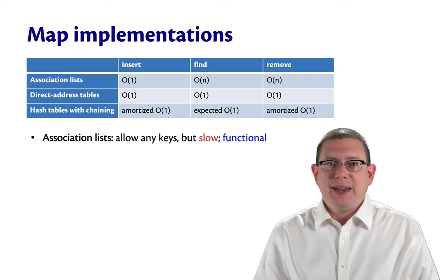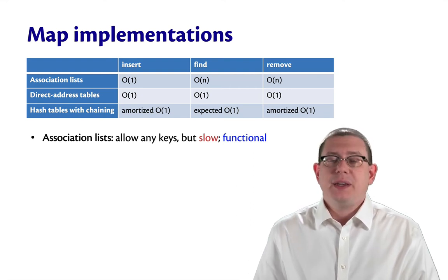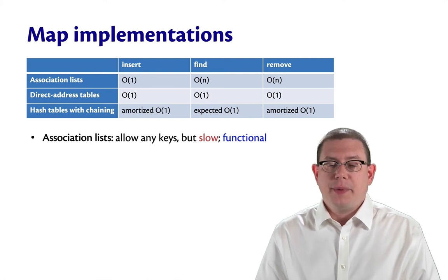We've now implemented the map ADT with three different data structures: association lists, direct address tables which are really just arrays, and hash tables with chaining, which combine both of the above.